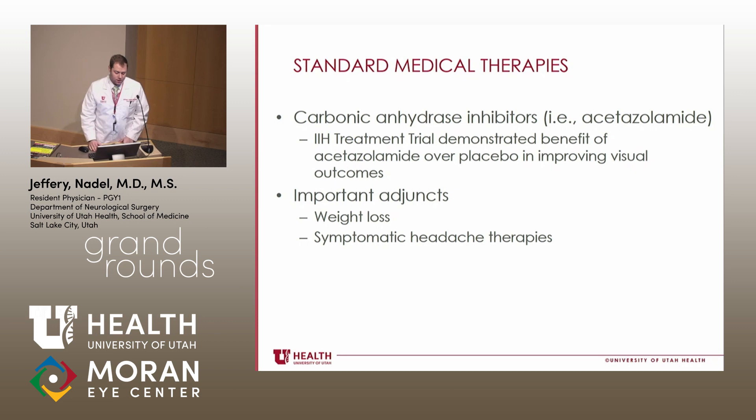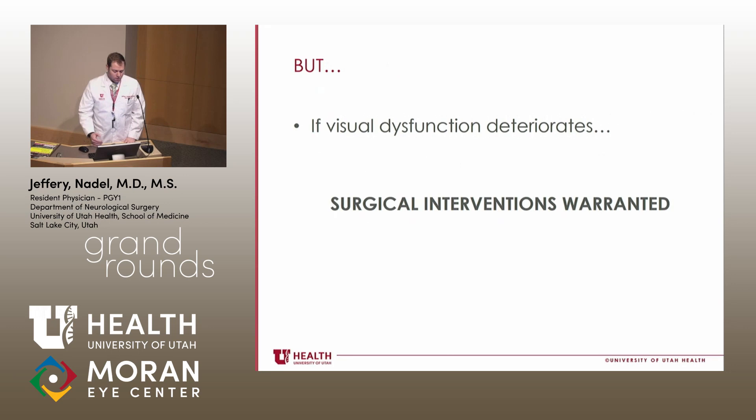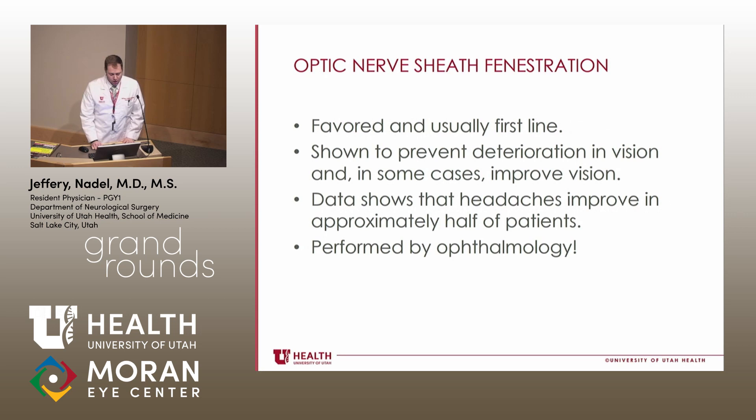Standard medical therapies include carbonic anhydrase inhibitors such as Diamox. The IIH treatment trial demonstrated benefit of acetazolamide over placebo in improving visual outcomes, so most folks are started on that. There are other medications used if patients don't respond well to Diamox. Important adjuncts include weight loss and symptomatic headache control. But if visual function continues to deteriorate despite optimized medical management, surgical interventions become warranted, and that's where I'd like to focus today.